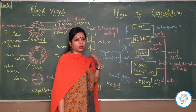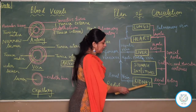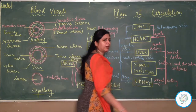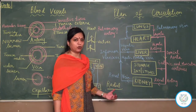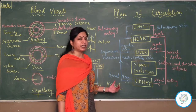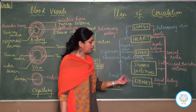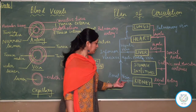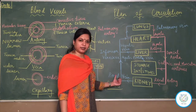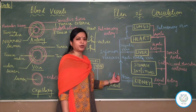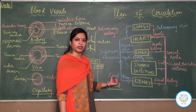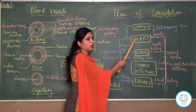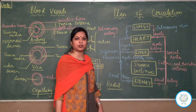The next organ in your syllabus is the kidney. The kidney is supplied oxygenated blood by the renal artery. The renal artery carries oxygenated blood from the dorsal aorta to the kidney, and likewise the renal vein collects deoxygenated blood from the kidney and pours it into the inferior vena cava. The inferior vena cava then carries all the deoxygenated blood back into the heart.